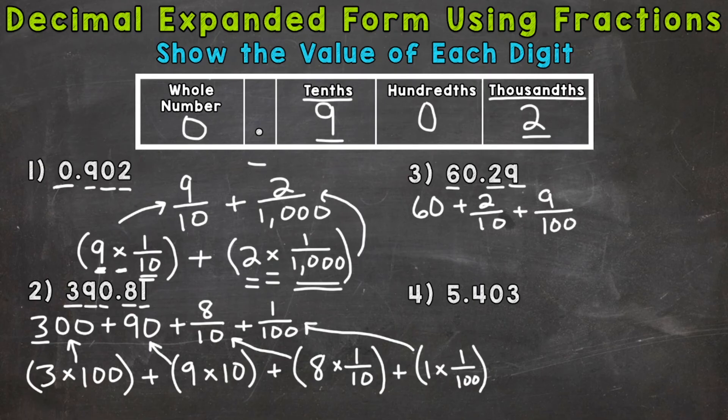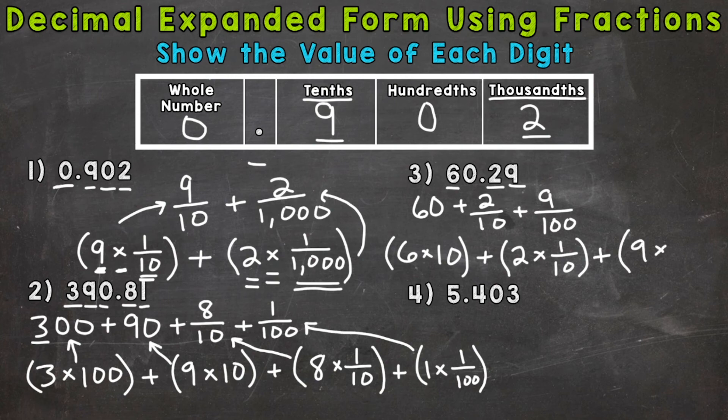So let's put it in the parenthesis form here. So six times ten, or six in the tens place, which is equivalent to 60, plus we have a two times one tenth, a two in the tenths place, plus a nine times one hundredth, or nine in the hundredths.